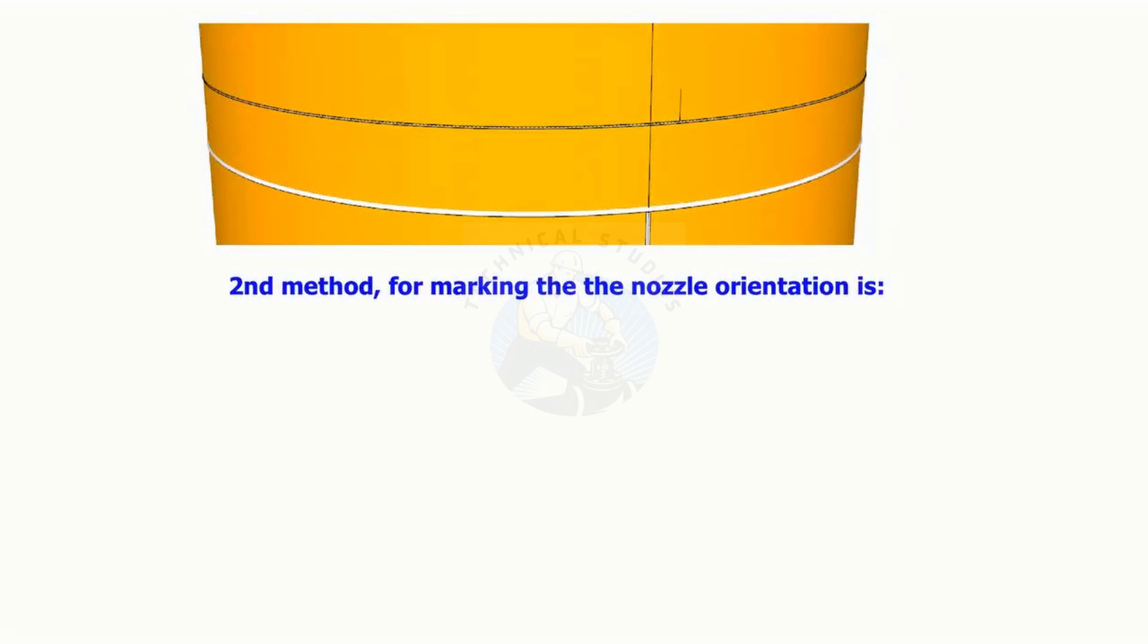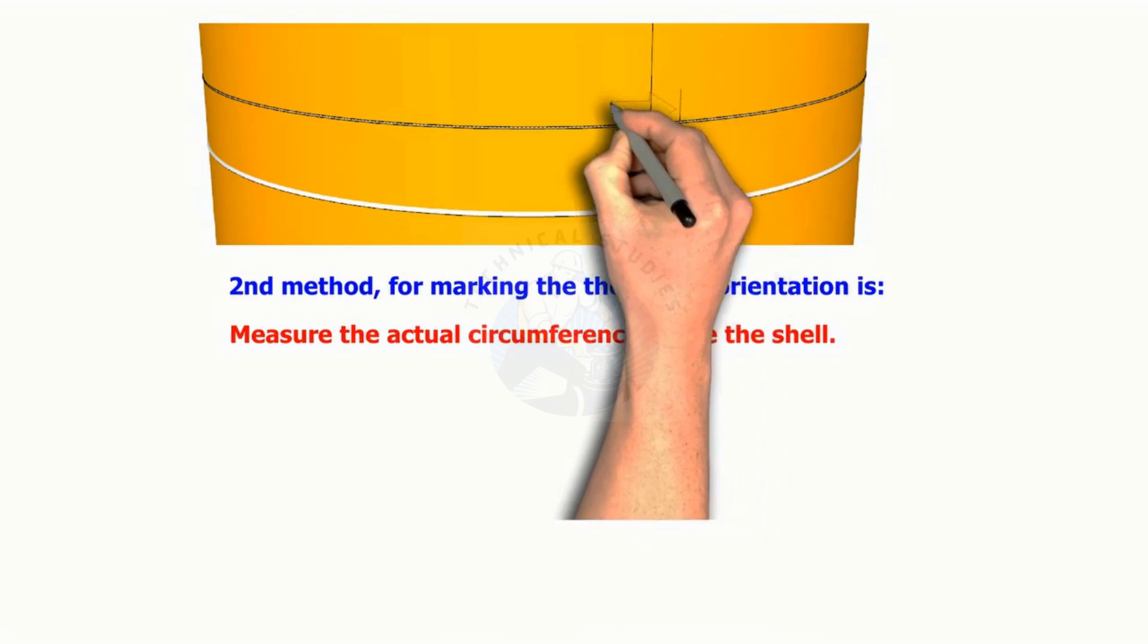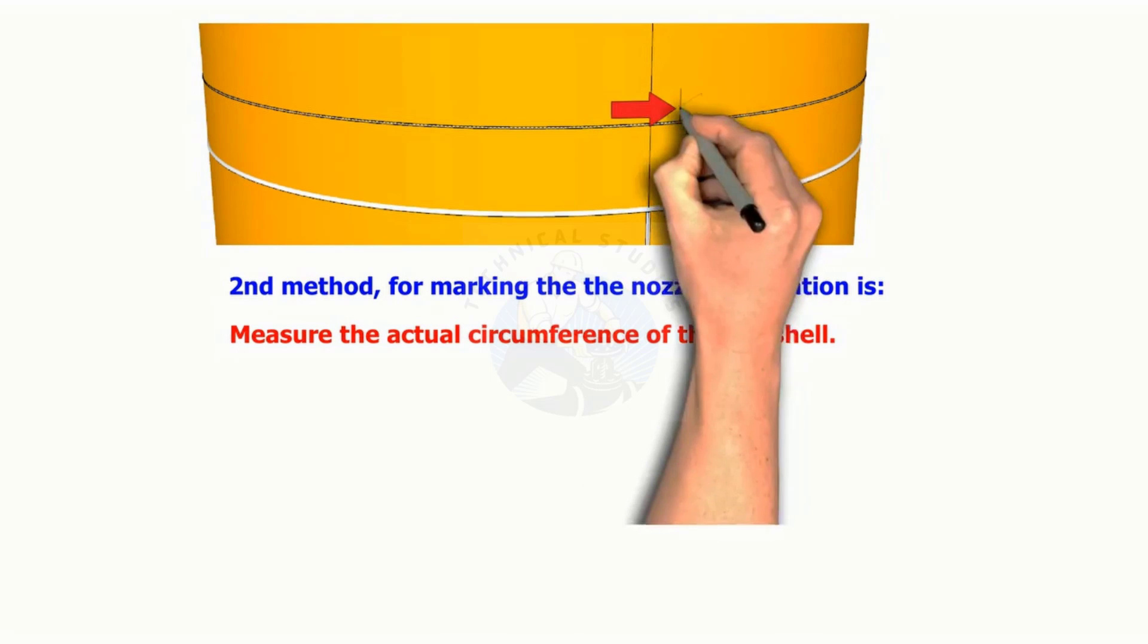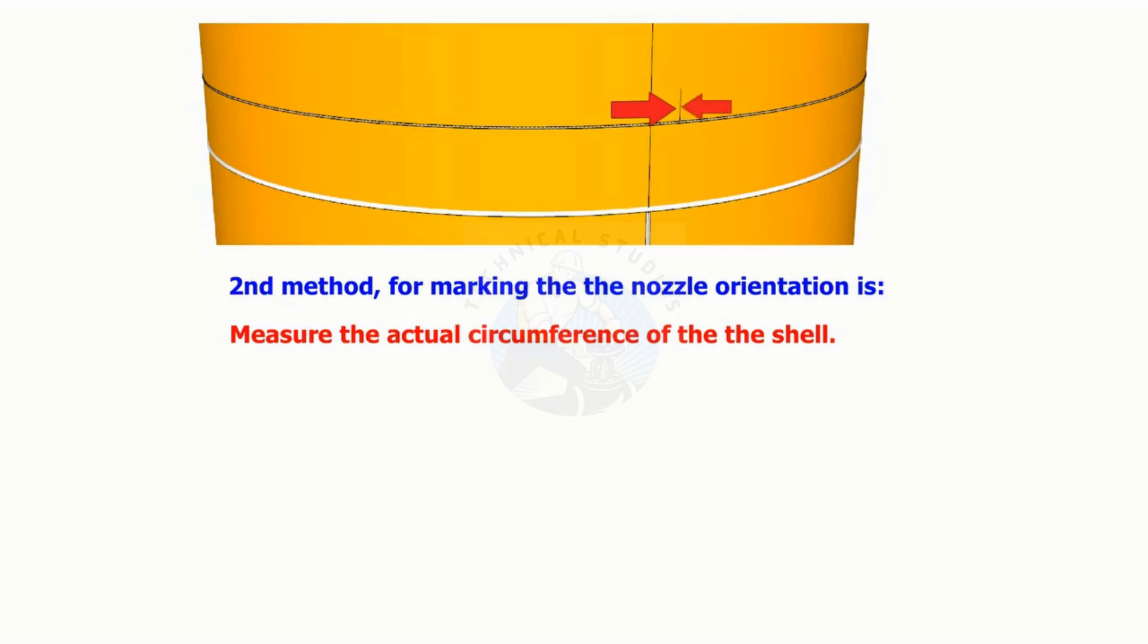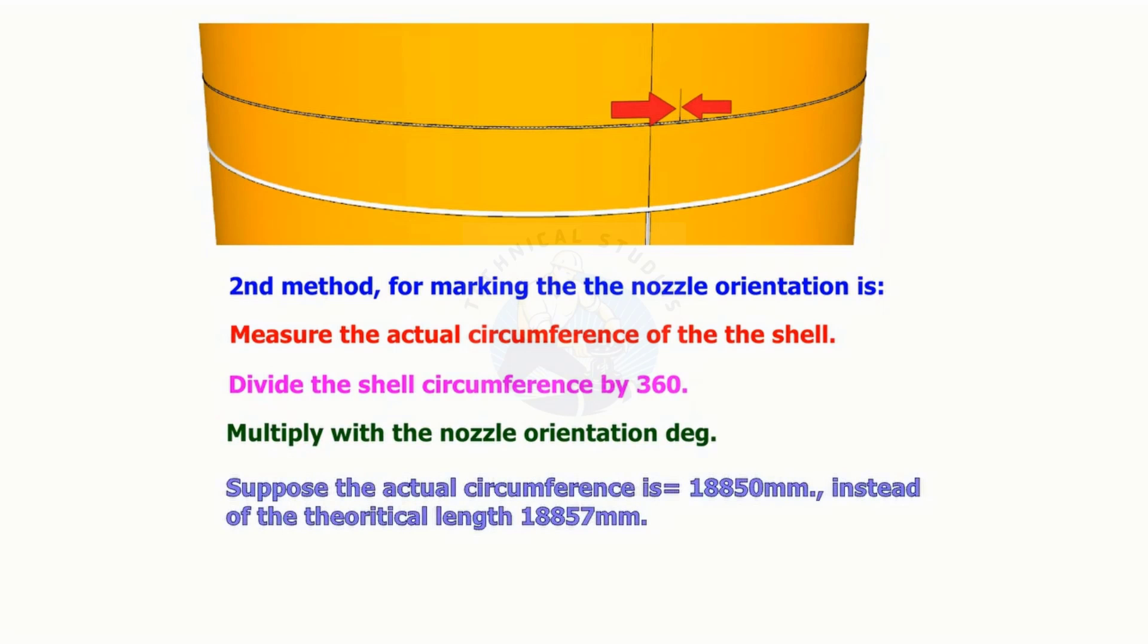The second method to mark the shell orientation is you need to measure the actual circumference of the shell by using a large flexible measurement tape. Divide the circumference by 360, then multiply by the nozzle orientation. Suppose the actual circumference is 18,850 instead of the theoretical length 18,857 millimeters.